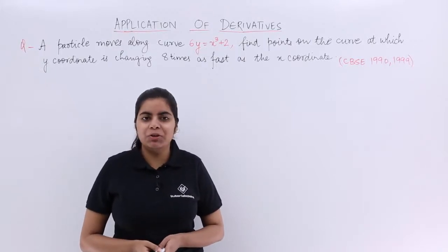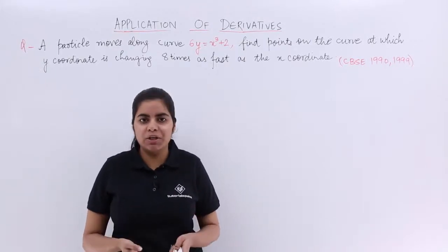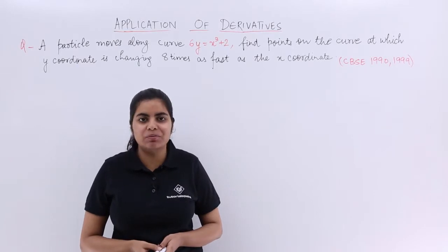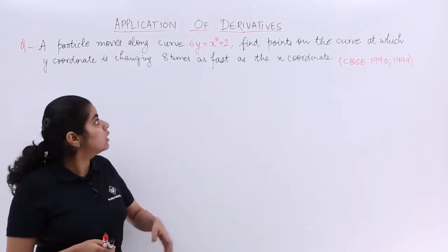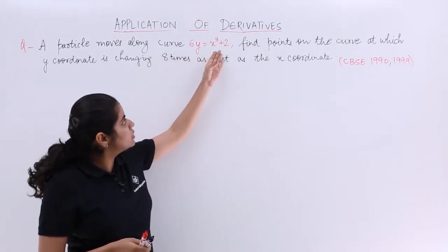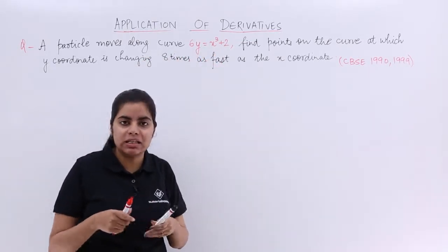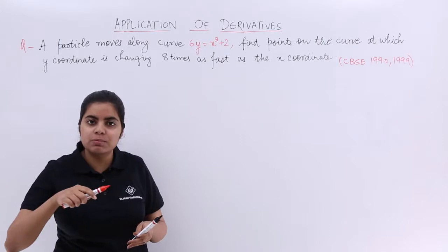In this video, let's see another numerical problem based on rate of change of quantities in application of derivatives. The question says a particle moves along the curve 6y equals x cubed plus 2. Basically, there is a curve given to you and a particle is moving on it.